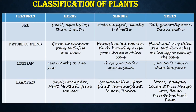Some common examples of herbs are basil, coriander, mint, mustard, grass, tomato. Examples of shrubs are bougainvillea, rose plant, jasmine plant, lemon and henna. Examples of trees are neem, banyan, coconut, mango tree, flame tree (also called gulmohar), and palm.